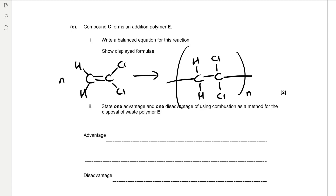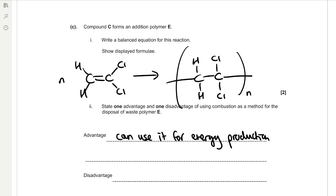State one advantage and one disadvantage of using combustion as a method for the disposal of waste polymer E. The advantage of combustion is that you can use it for energy production. However, a disadvantage is that you could form toxic waste products such as HCl gas.